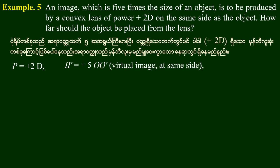Note that image I-dash is 5 times O-dash. So the image is equal to 5 times O-dash. The image is on the same side as the object.